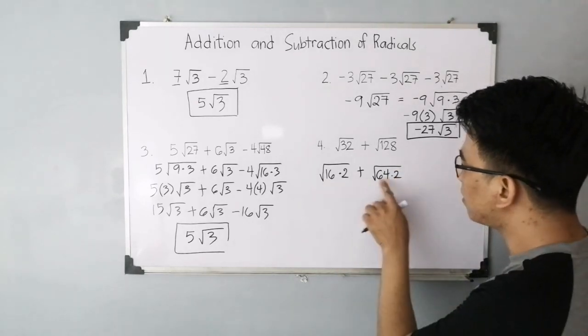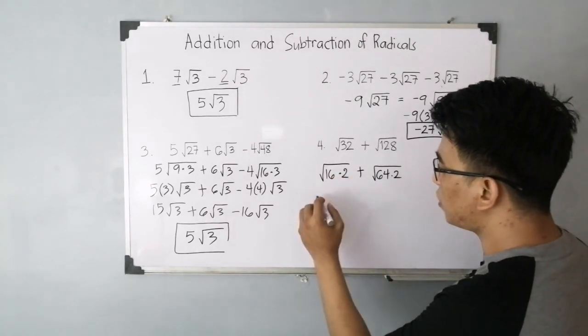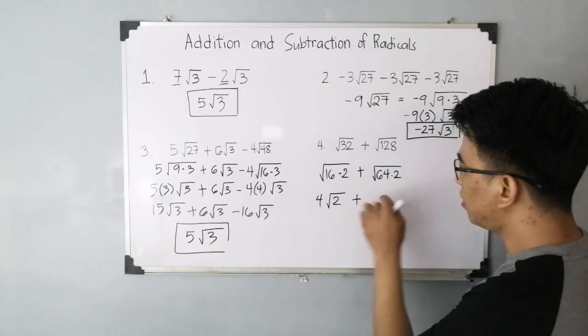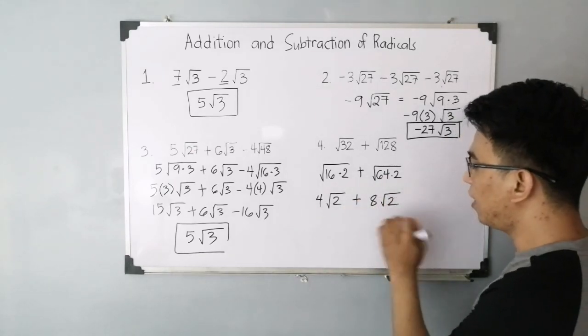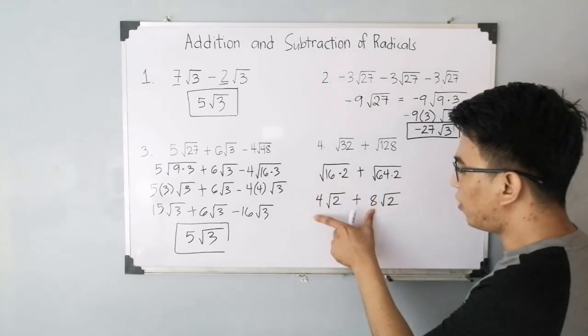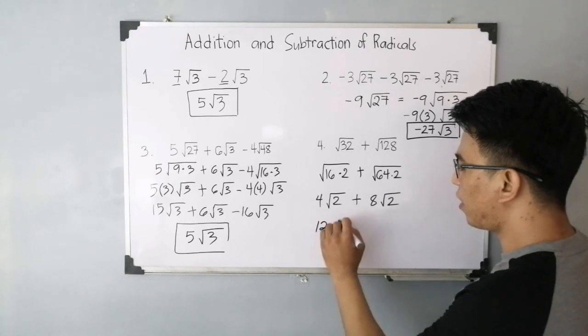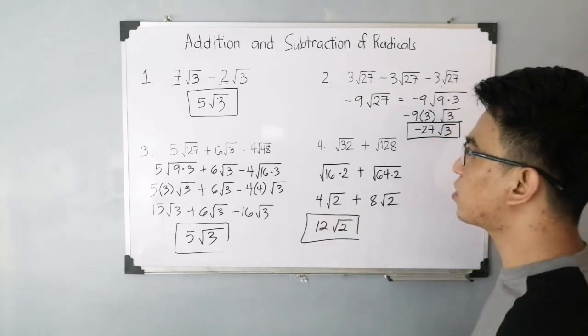And as you can see, 16 and 64 are perfect squares. So you have the square root of 16 which is 4, so we have square root of 2 plus square root of 64 which is 8 square root of 2. With common radicals, simply add the coefficients: 4 plus 8. This is 12 square root of 2. This is the correct answer for item number 4.